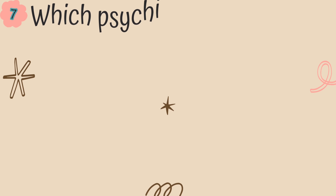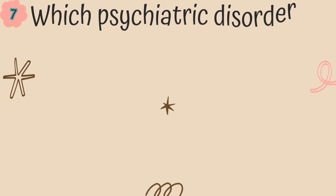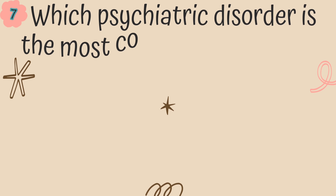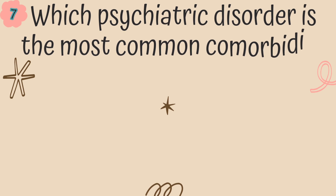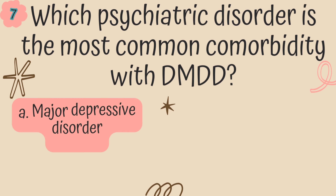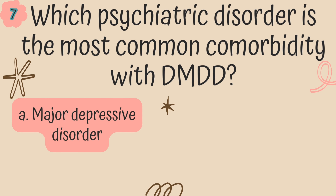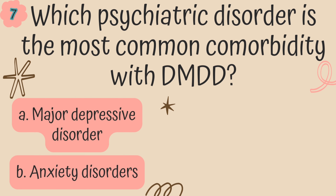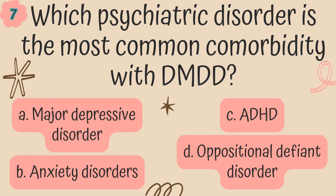Question 7. Which psychiatric disorder is the most common comorbidity with DMDD? Is it A. Major depressive disorder, B. Anxiety disorder, C. ADHD, or D. Oppositional defiant disorder?